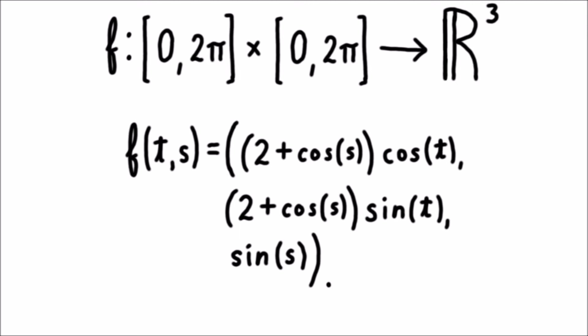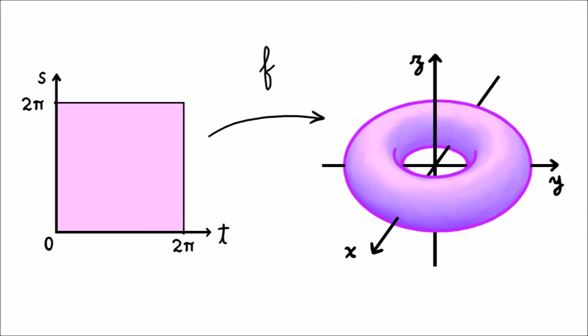Here's a parametrization of a torus sitting in space. This is a function f from a square to R³. You feed it two numbers, s and t, both at least 0 and at most 2π, and it spits out a point on the torus.